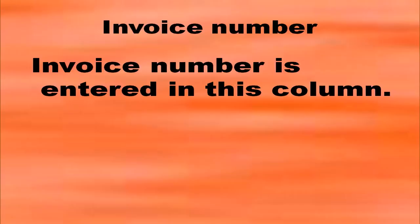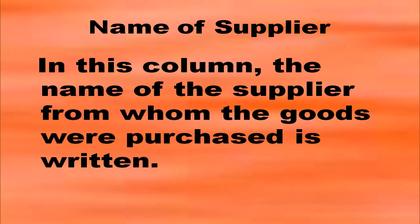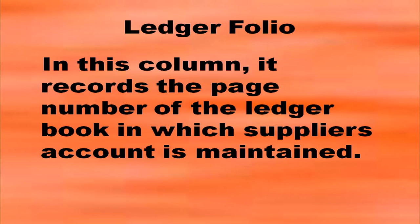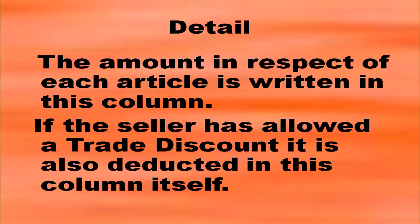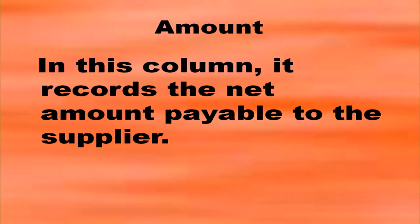In the second column of the purchases book you have to write the invoice number. Third column is the name of the supplier from whom the goods were purchased. Then comes the ledger folio column, where the page number of the ledger book in which the supplier's account is maintained is written. The amount in respect of each article is written in the details column. If the seller has allowed a trade discount it is also deducted in the details column. The amount column records the net amount payable to that concerned supplier.